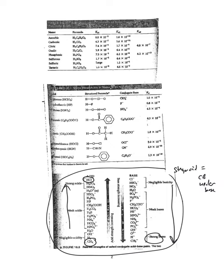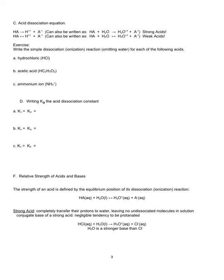Looking up HSO₄⁻ and HCO₃⁻ — these were the two acids identified. You'll notice that HSO₄⁻ is higher up on the table and therefore is a stronger acid.